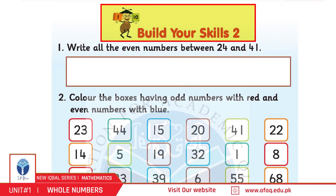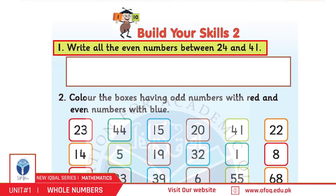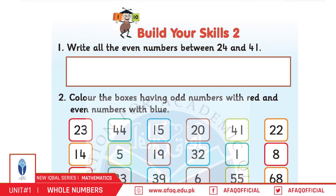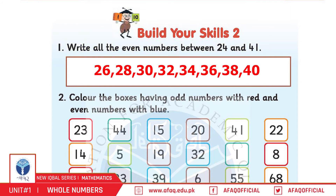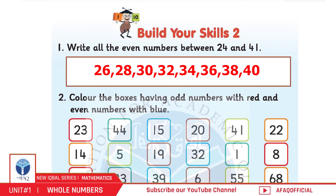Build Your Skills 2, page 6. Question number 1: Write all the even numbers between 24 and 41. Answer: 26, 28, 30, 32, 34, 36, 38, and 40.